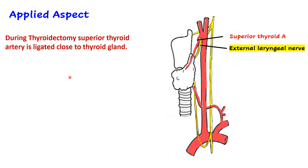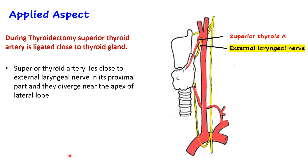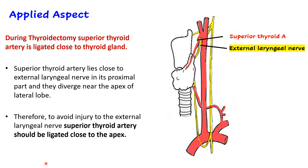During thyroidectomy, when the superior and inferior thyroid arteries have to be ligated, one has to be very careful. The superior thyroid artery is ligated close to the thyroid gland because the proximal part of the artery is very close to the external laryngeal nerve, but when it reaches the upper pole the nerve deviates away from the artery. Therefore, to avoid injury to the external laryngeal nerve, the superior thyroid artery should be ligated close to the upper pole or apex of the thyroid gland.